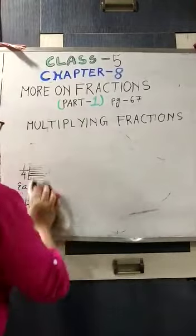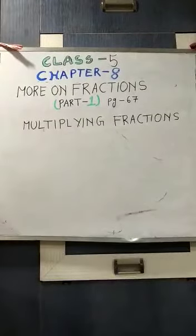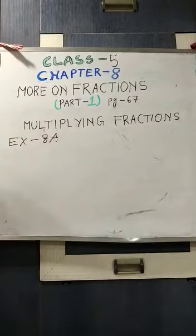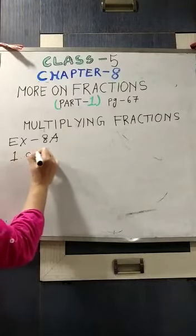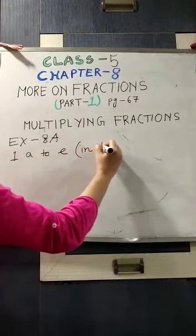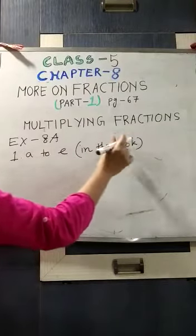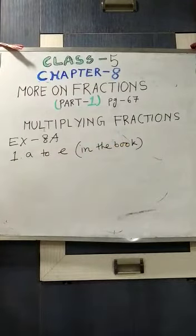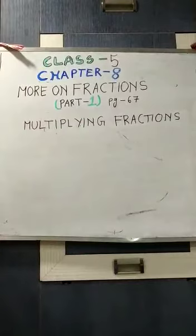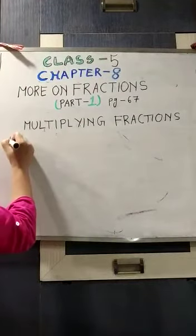Now I am rubbing this one. Exercise 8A, 1A to 2E, will be done in the book by yourselves. Clear? Now we will go straightaway to multiplication. Take out page 68. It says multiply. I am taking the example of 2A.